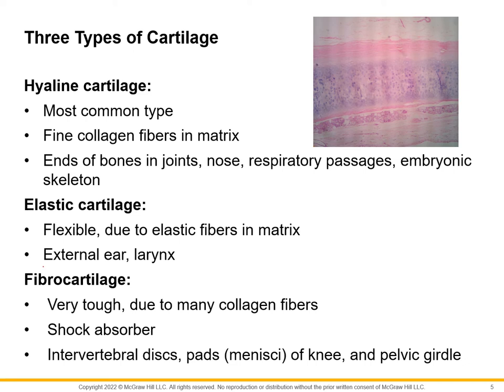Elastic cartilage — the main place we're going to look at it is the external ear. That's why you can wrinkle up the ear and have it come back into shape. It's also found in the larynx, and more specifically there's a spot called the epiglottis. Most of us know the epiglottis is the little thing that covers our respiratory tract so we don't swallow down the wrong pipe. Elastic cartilage has a lot of elastic fibers and is designed to change shape and come back.